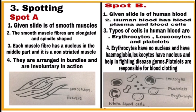Now, spotting. For this, divide the page into two equal parts. Write spot A on one side and spot B on the other side. Write 4 points including identification in each spot and draw a labeled diagram of each spot. Here spot A is of smooth muscle and spot B is of human blood.